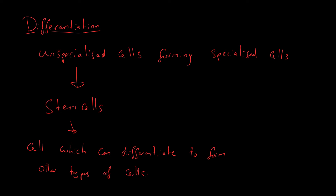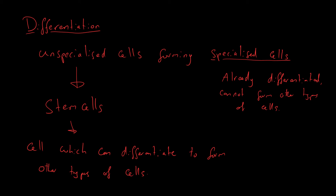A specialized cell is one which has already been differentiated, and it cannot form other types of cells. That doesn't mean specialized cells can't divide by mitosis — they certainly can — but if you have a liver cell and it divides by mitosis, it will form a liver cell. It can't form a neuron or a blood cell. Whereas a stem cell could differentiate into any other type of cell. That's the difference between a specialized and an unspecialized cell.